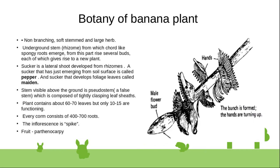Botanically, the banana plant is non-branching with a soft stem. It has a large underground stem called a rhizome, which is spongy in nature. From this rhizome, roots emerge, and several buds arise, each giving rise to a new plant.